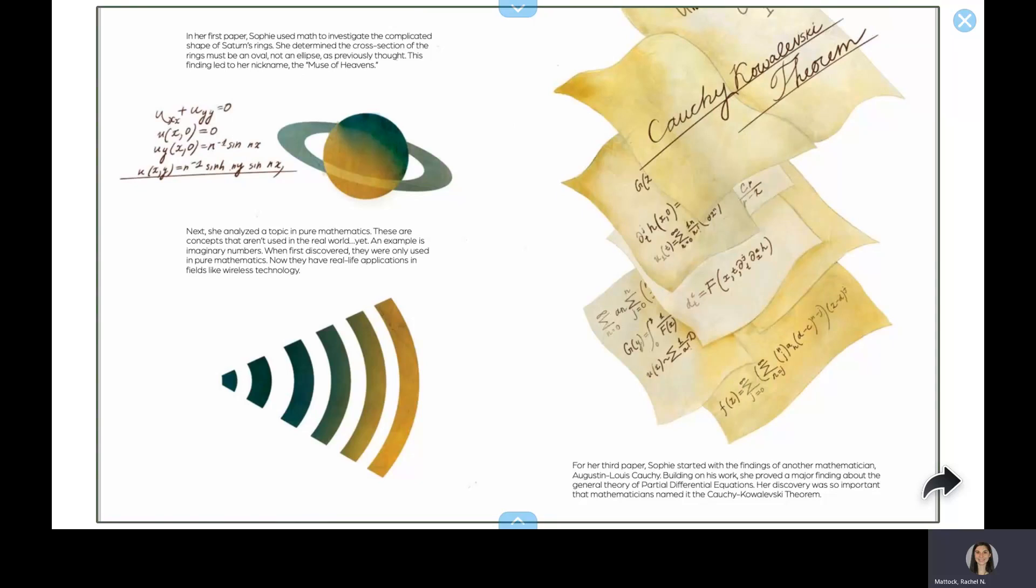Next, she analyzed a topic in pure mathematics. These are concepts that aren't used in the real world, yet. An example is imaginary numbers. When first discovered, they were only used in pure mathematics. Now, they have a real-life application in fields like wireless technology.